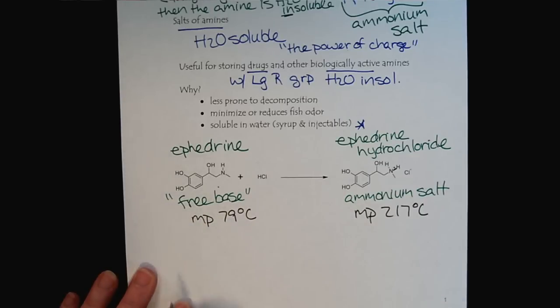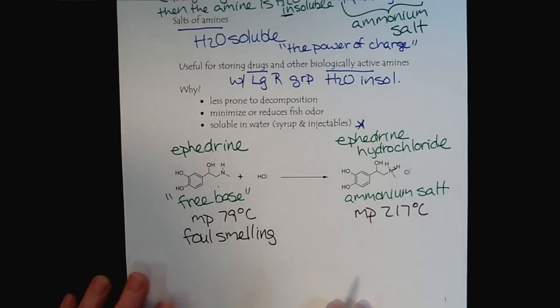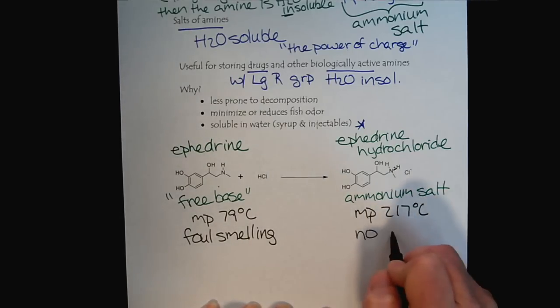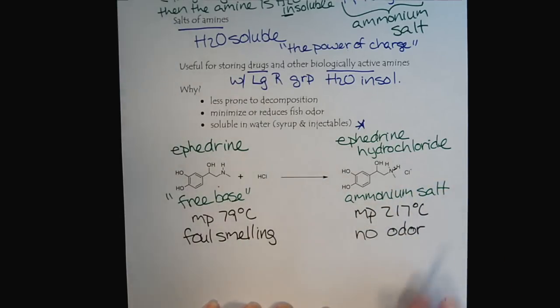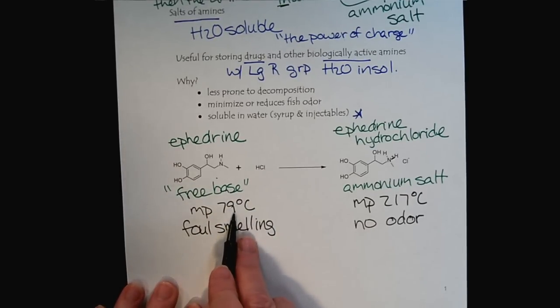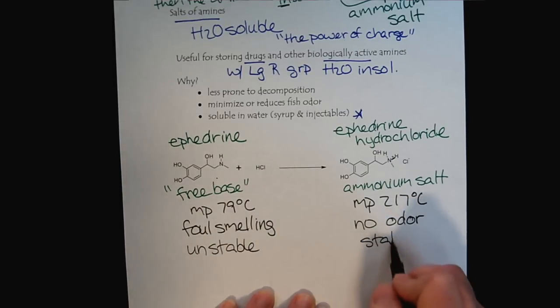The free base of ephedrine is very foul-smelling. The common names of amines are like putrescine and cadaverine. If you've ever smelled rotting meat, you are smelling amines. The ammonium salt has no odor. In addition to having a very low melting point, it's also chemically unstable versus the ammonium salt, which is very stable.